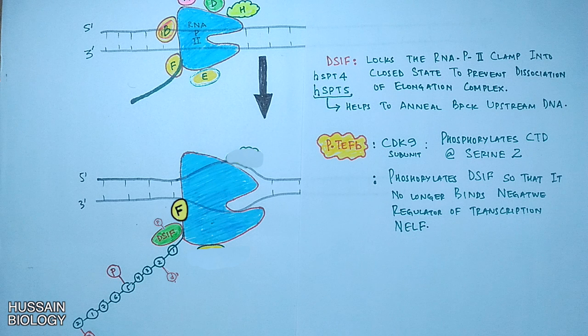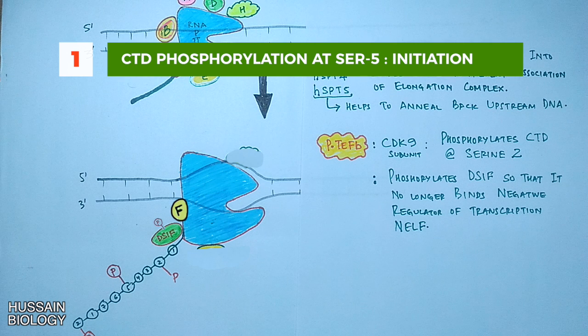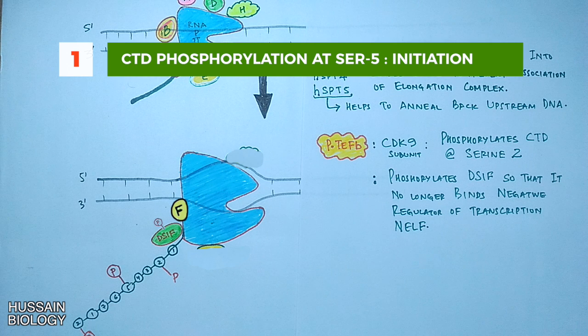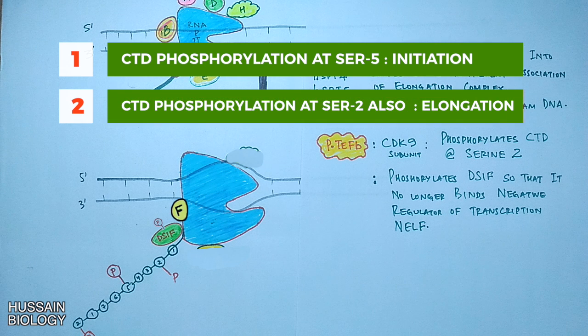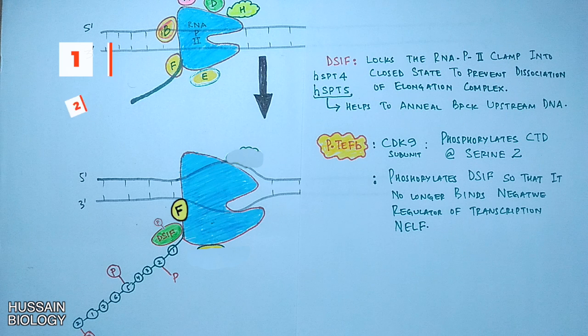During the initiation process of transcription the serine 5 is phosphorylated. But once the elongation starts, once the polymerase starts to move on, the serine 2 is phosphorylated by CDK9. So it is by the CTD subunit of RNA polymerase which regulates the initiation, elongation, and also it aids in termination.